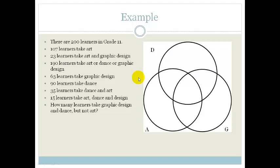And then we're going to look through our information and see if they tell us anything about where there is an intersection for all three. What we're looking for is this intersection here. And you can see that they give us that 15 learners take art, dance and design. So therefore we can pop in a 15 there.